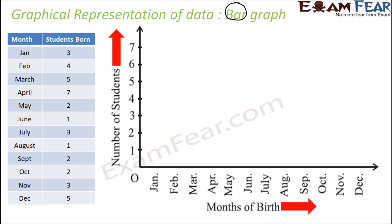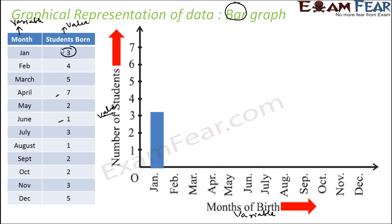We put the variable — months of birth — on the x-axis, and the values on the y-axis, ranging from one to seven. For January, three students were born, so I create a rectangular bar of height three. For February, four students, so a bar of height four. The length or width of each bar can be anything.